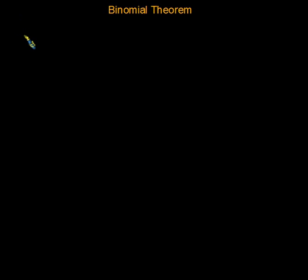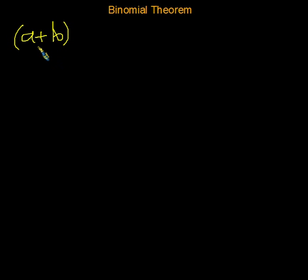In order to discuss the binomial theorem, I need to remind you what a binomial is. When we have two things added together, we call each of the things terms, and we call that expression a binomial. If we have many things added together, we call that a polynomial. So a binomial is a special case of a polynomial. So this a plus b is a binomial.